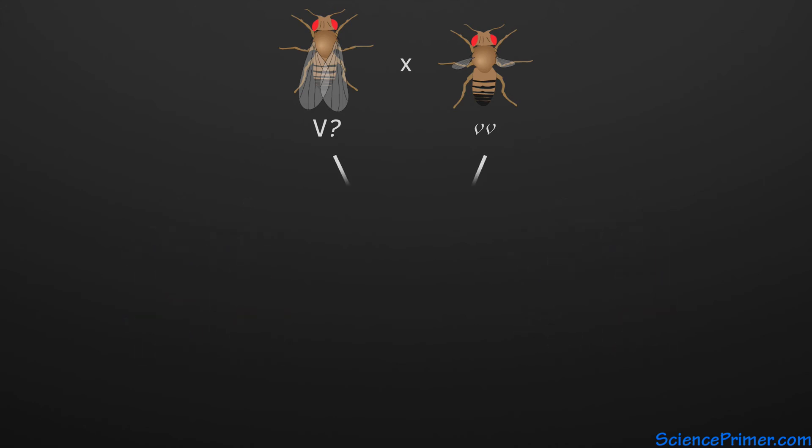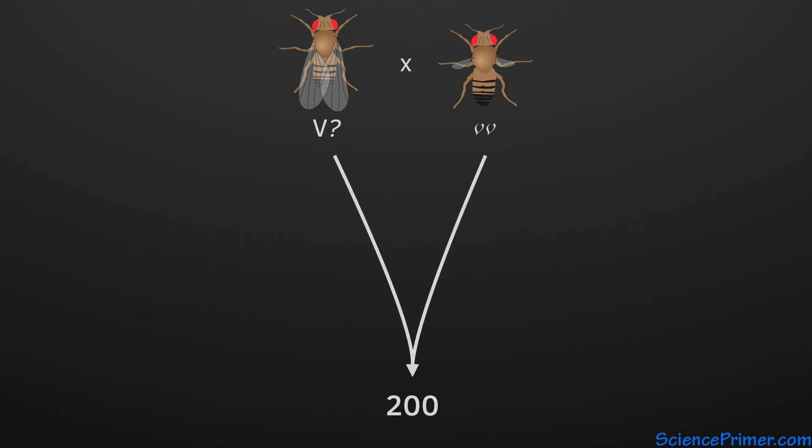It is not unusual to get as many as 200 offspring from a single fruit fly cross. If a cross between one individual expressing the mutant phenotype and one with the wild-type phenotype produced nothing but wild-type offspring, we can be sure that the wild-type parent is homozygous for the gene, carrying two copies of the wild-type allele.